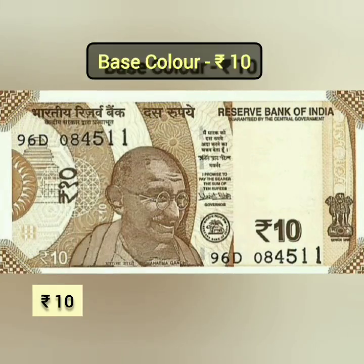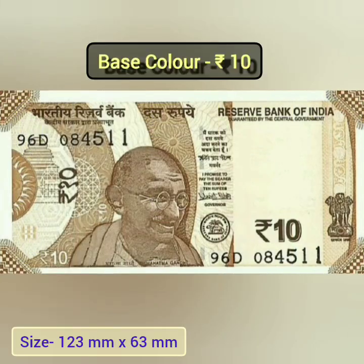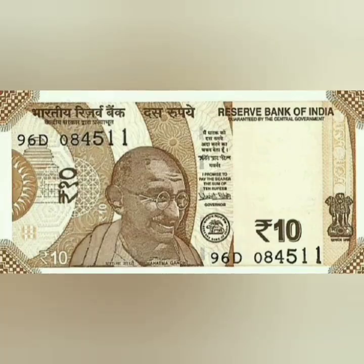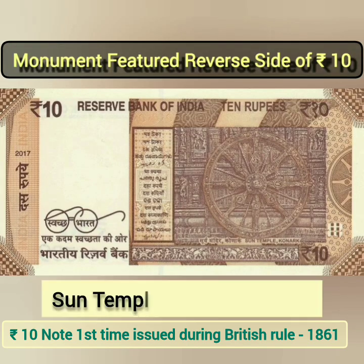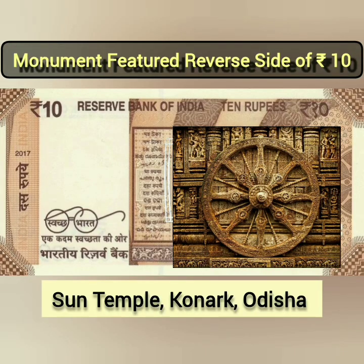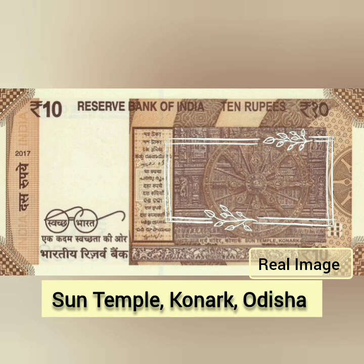This is a 10 rupee note. Its base colour is brown. The reverse side features a depiction of the Sun Temple Konark located in Odisha.